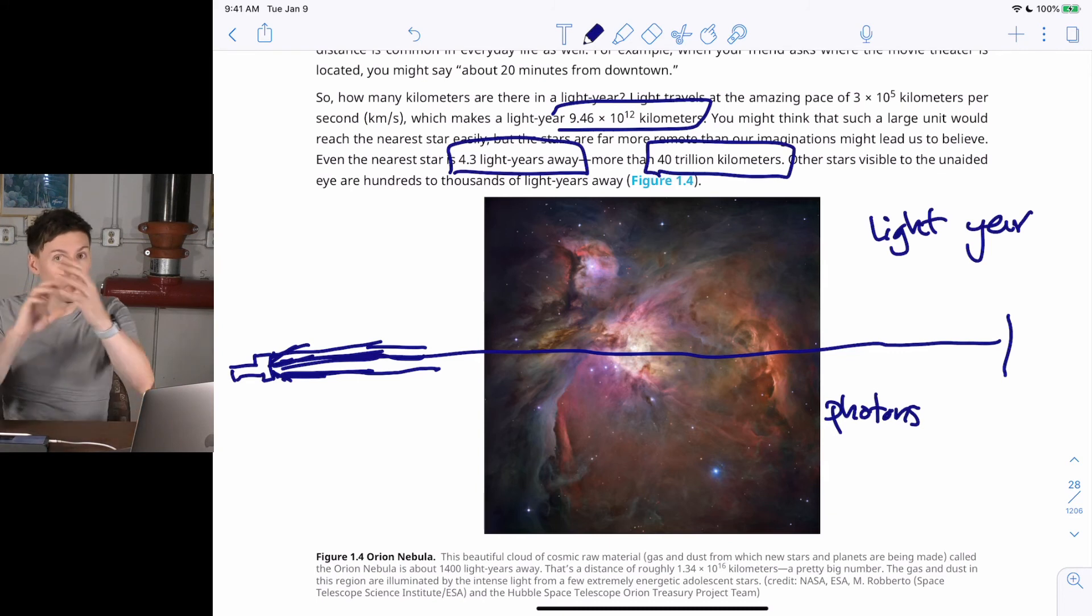So that's the closest star to us, and that's how we think about distances. We think about it in terms of the time it takes light, or the distance light travels in a year, because the distances are so vast, 40 trillion kilometers, that we can't even think about it.